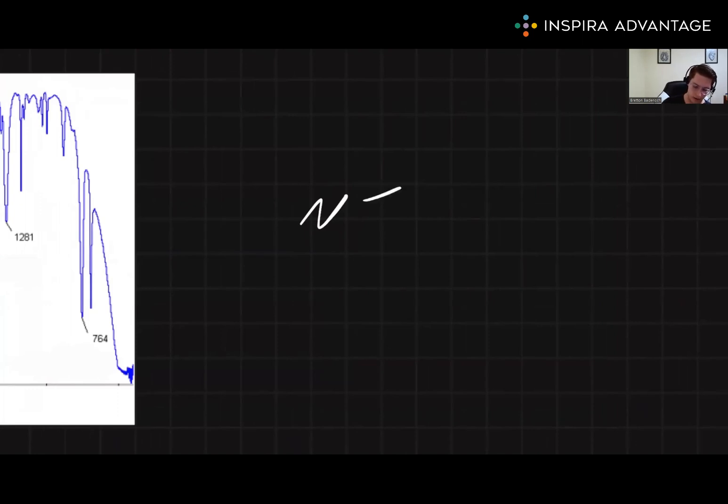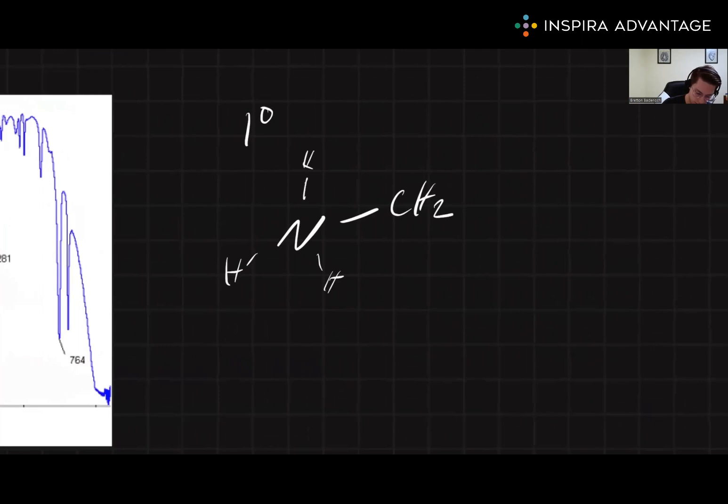For a primary amine, we have a single carbon group, three hydrogens. Then for a secondary amine, we have two methyls, two hydrogens. For a tertiary amine, we have three carbons, one hydrogen.